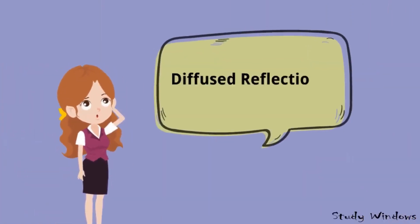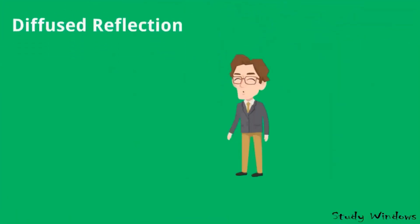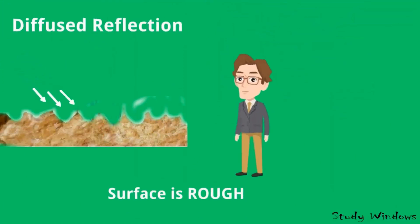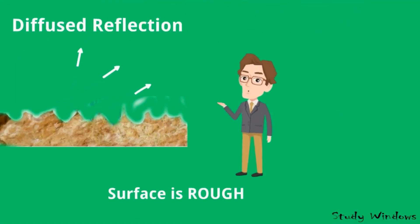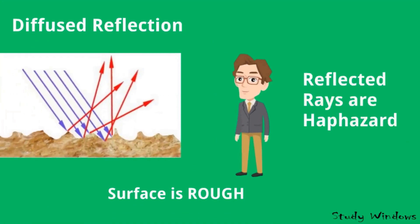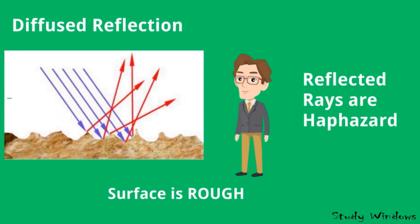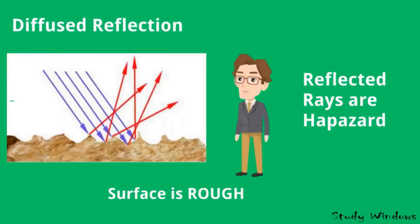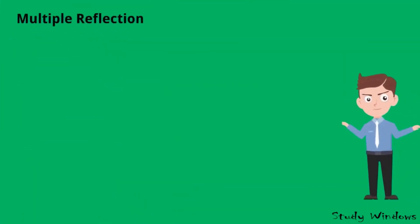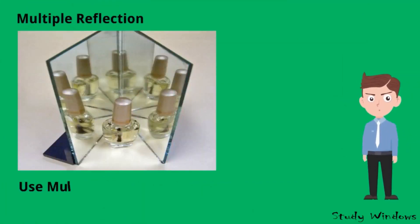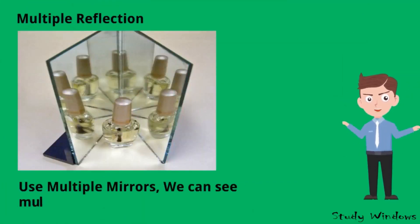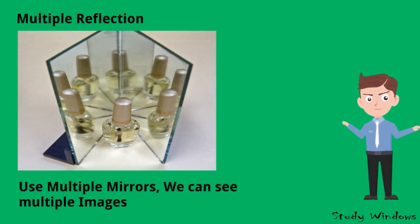In diffused reflection, when the surface is very rough, the reflected rays will not be uniform — they will not be parallel; they will be haphazard. In multiple reflection, if we use multiple mirrors, we can see multiple images, and this is known as multiple reflection.